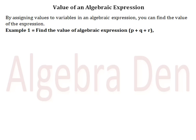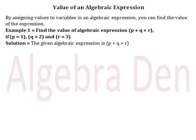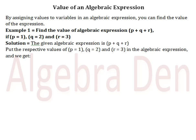Example 1: Find the value of algebraic expression p plus q plus r, if p is equal to 1, q is equal to 2, and r is equal to 3. Solution: The given algebraic expression is p plus q plus r. Put the respective values of p equals 1, q equals 2, and r equals 3 in the algebraic expression, and we get 1 plus 2 plus 3, which is equal to 6.